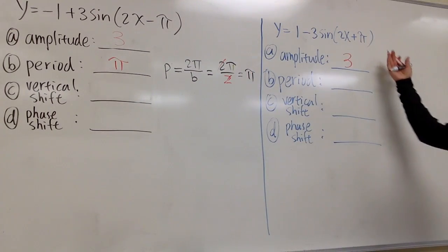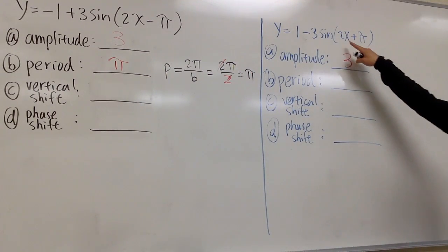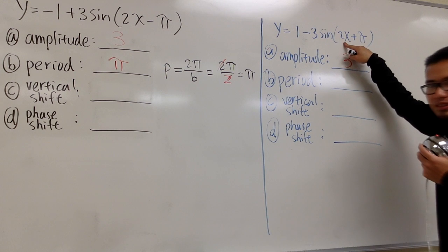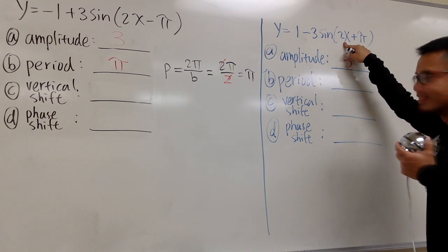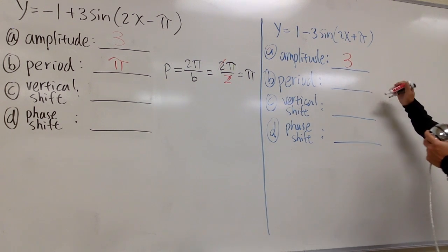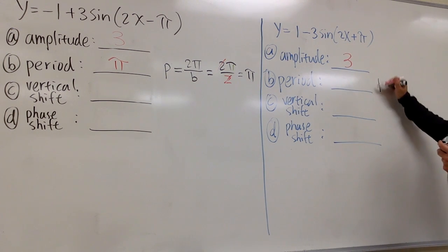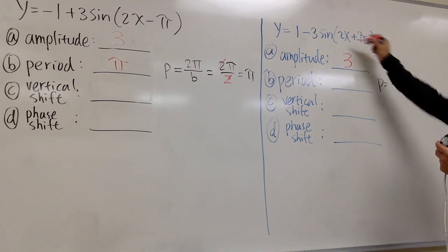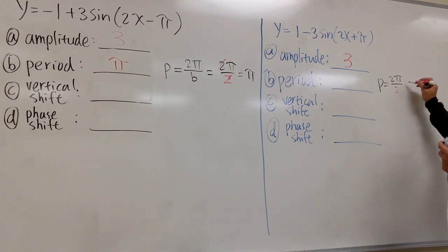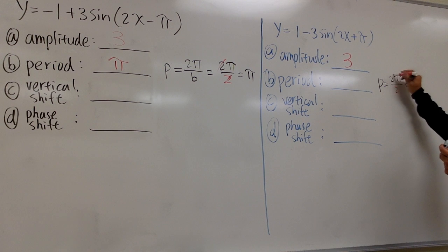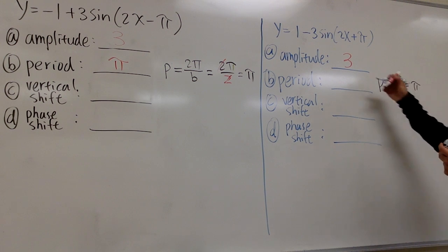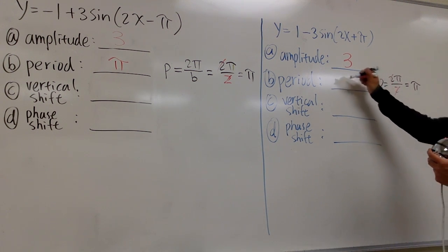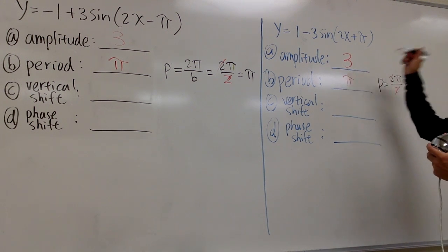In this case here, because the b value is the same, the period right here is also going to be 2π over 2, so it's still going to be just π as well.